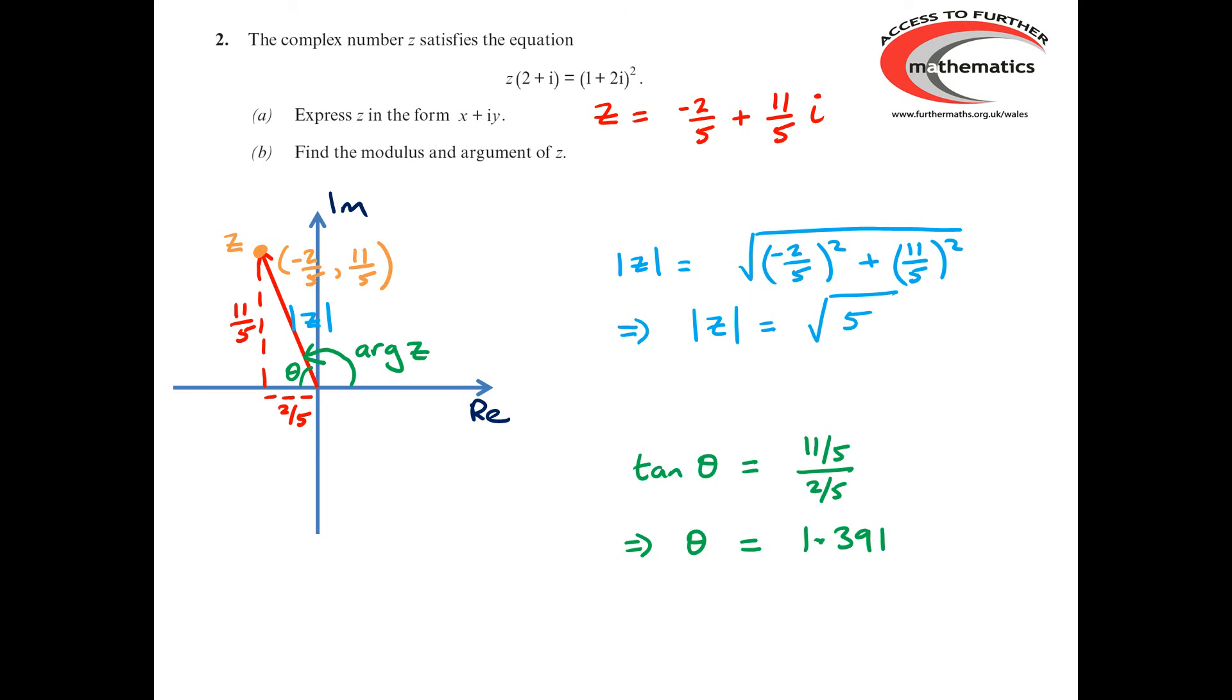Now, we haven't quite done yet because we've got to remember that θ isn't the argument of z. However, we do know that θ together with the argument of z makes a straight line. So, we can say that arg z is π minus θ, which is 1.75 radians.